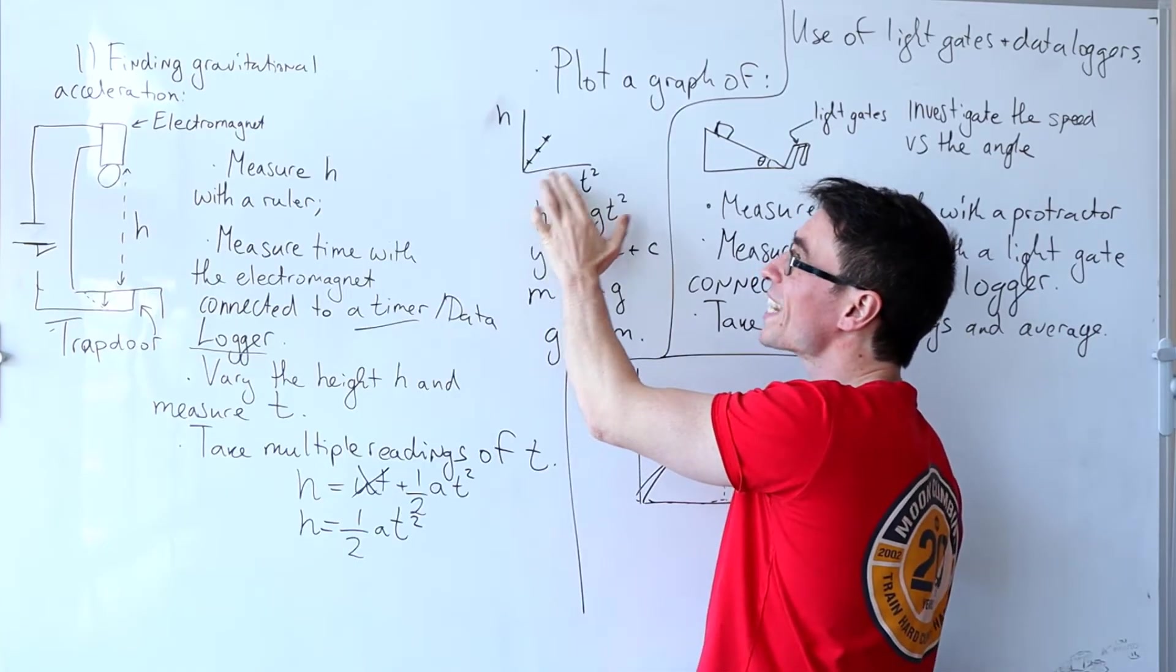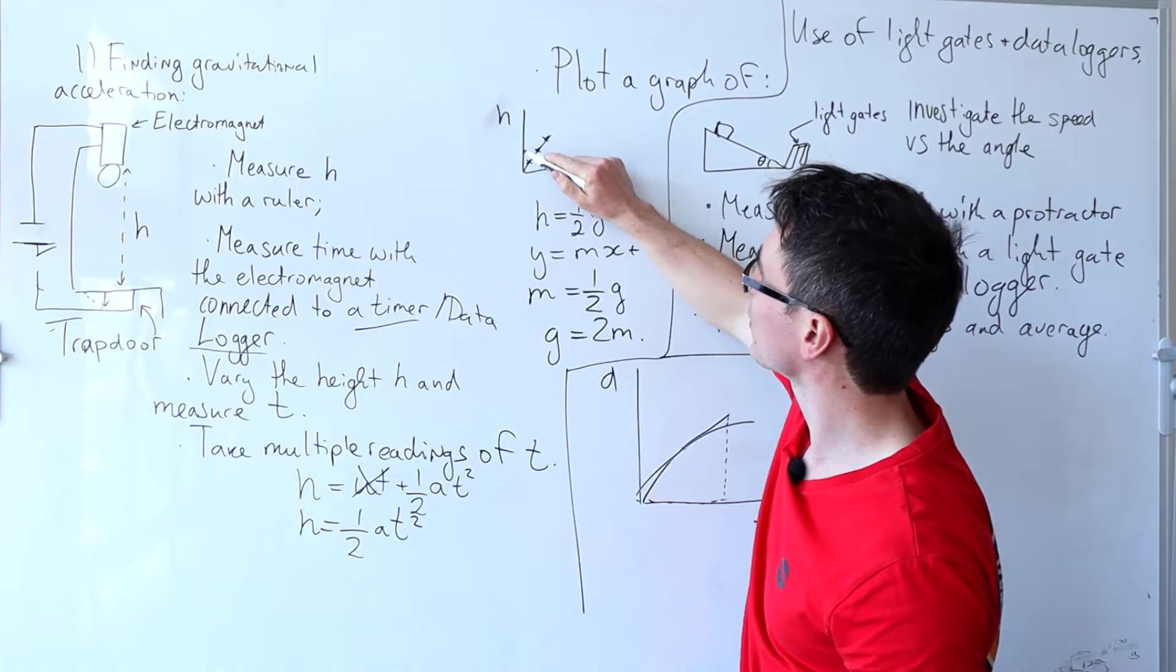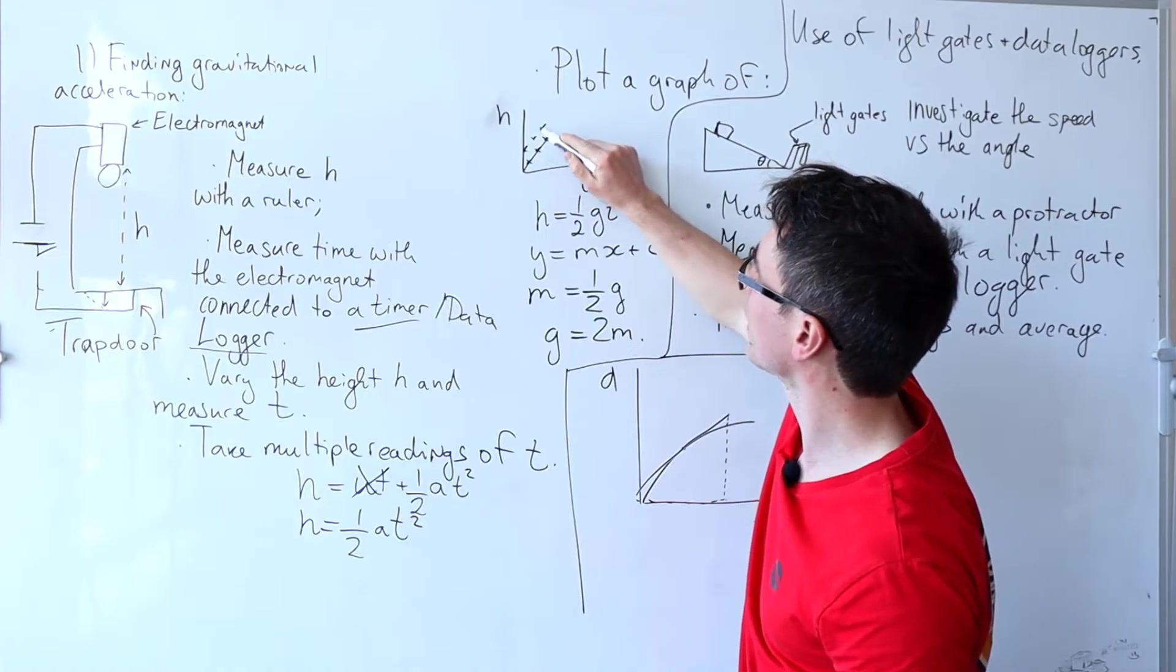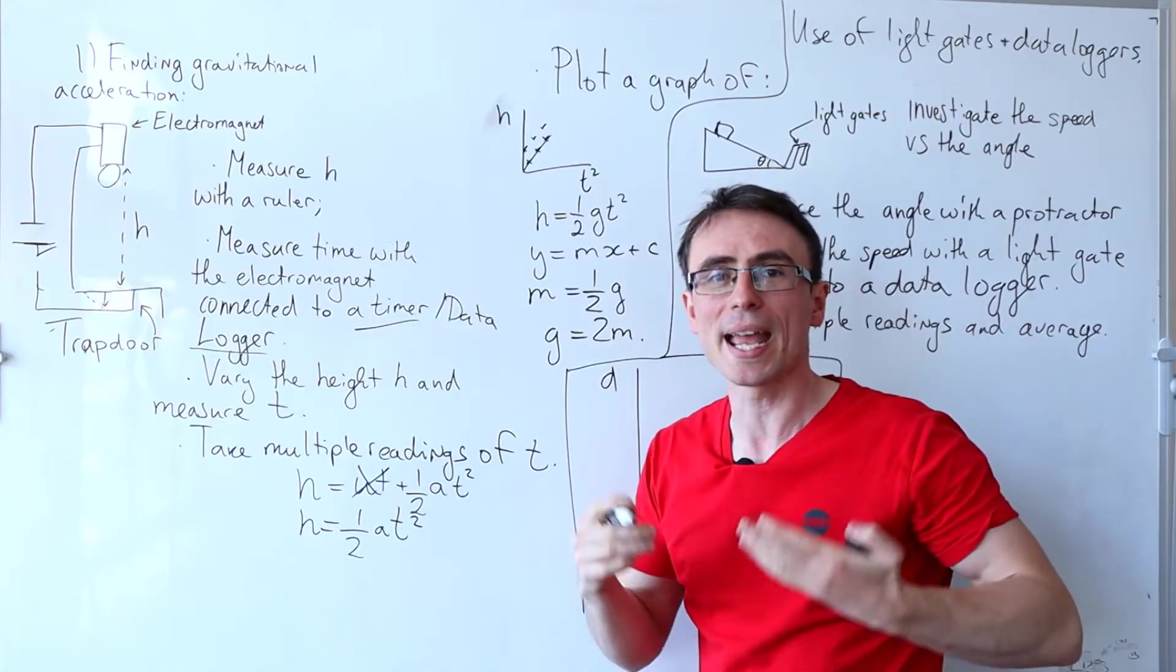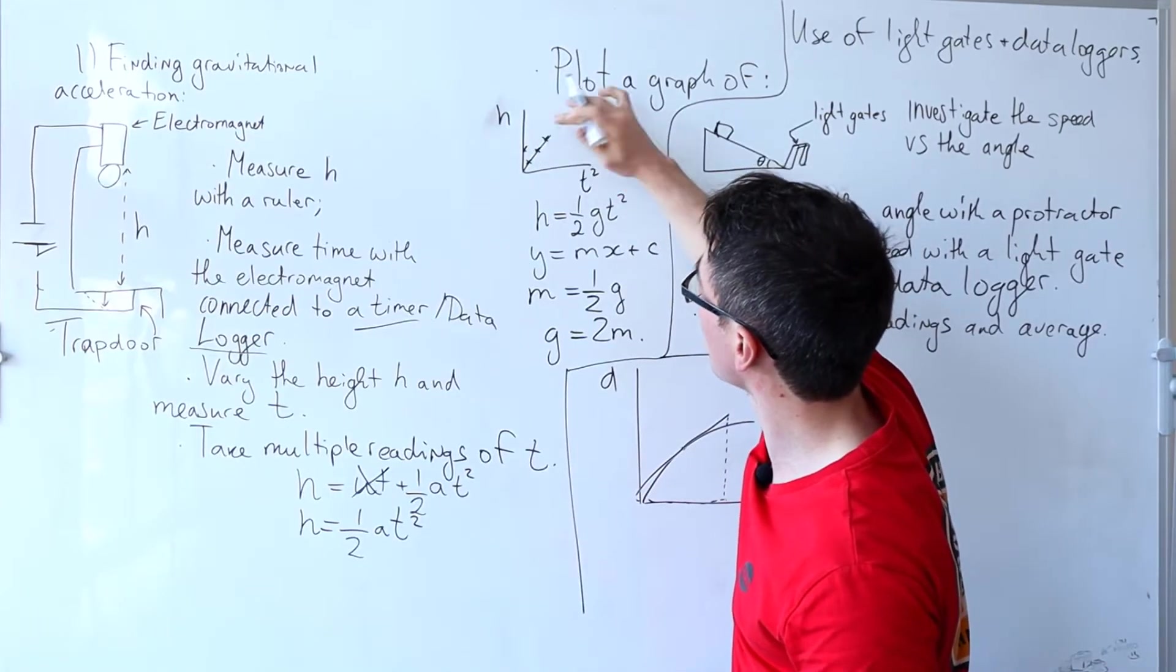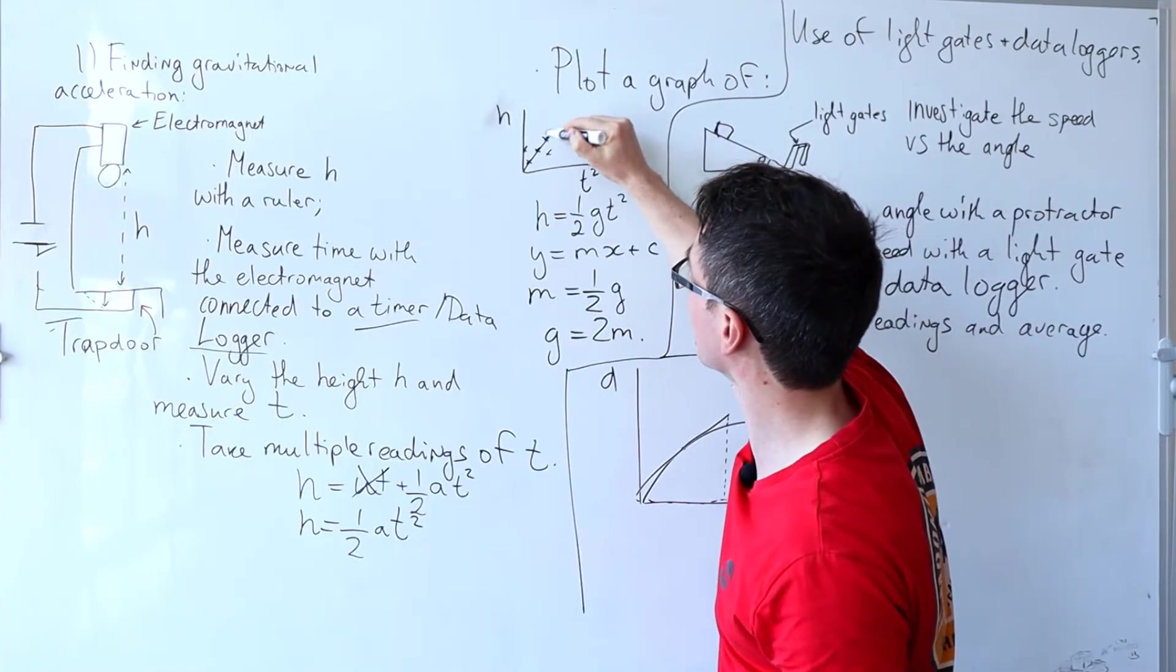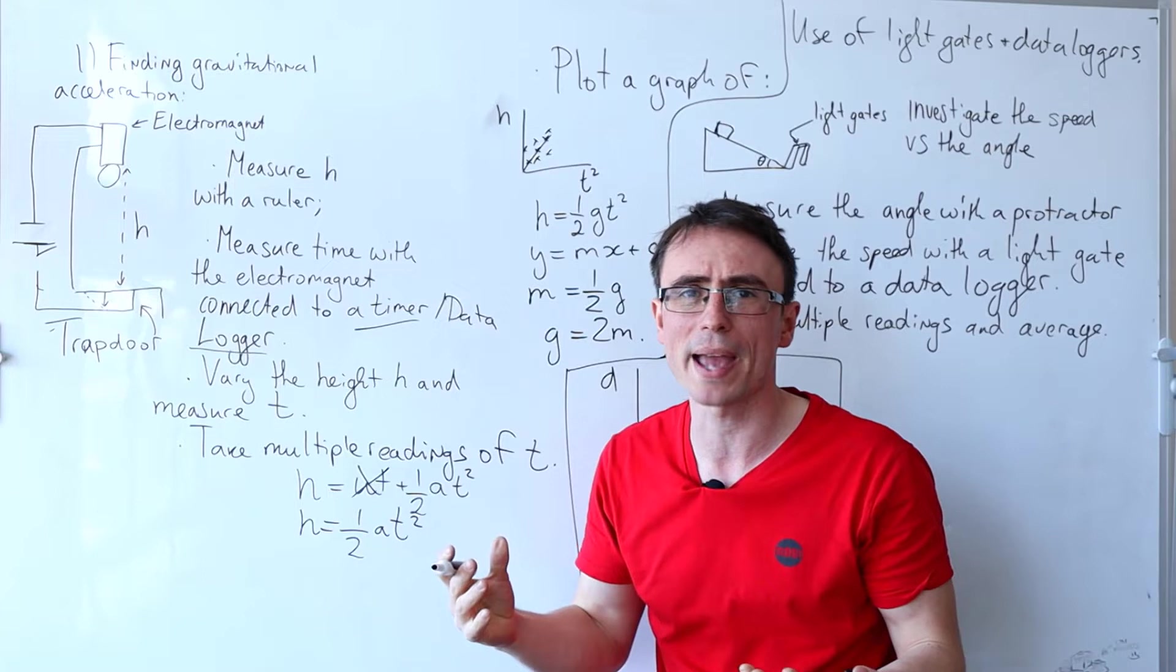We'll be expecting a straight line through the origin. Notice that if the graph is just shifted up a little bit like so and all the points are shifted by the same amount then we're going to have a systematic error. If we have a graph in which all the points are scattered around a little bit more then we'll probably have quite a few random errors involved.